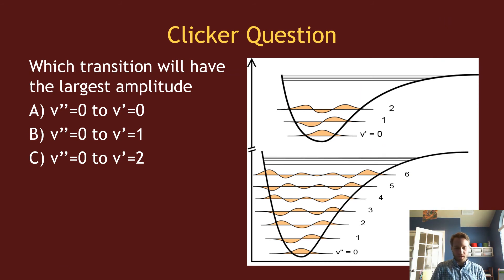Here's a question trying to estimate which transition has larger amplitude between V-prime and V-double-prime. If I start at V-double-prime equals zero and draw a straight line going up, what I see is that V-prime equaling one happens to have the best overlap because it has a maximum where my V-zero function has a maximum.